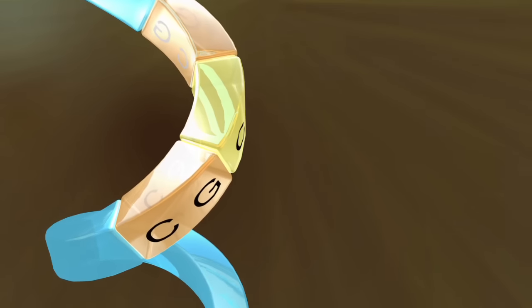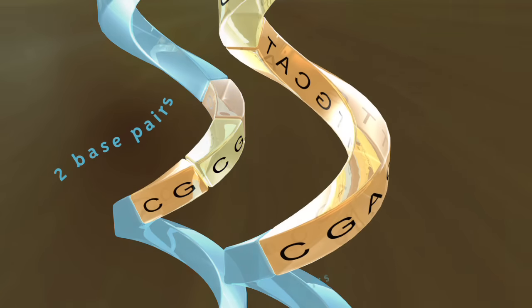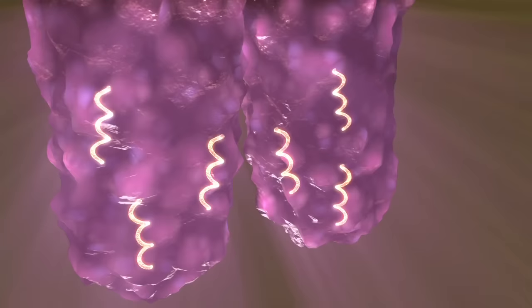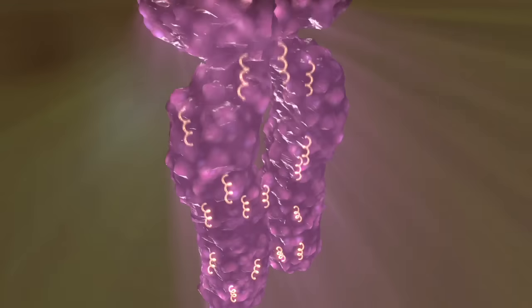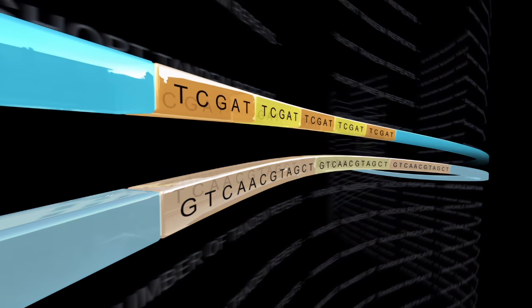As the name implies, the repeated stretches in STRs are short, only 2 to 10 base pairs long. For this reason, and because they are dispersed more evenly throughout the genome than the longer variable number tandem repeats, or VNTRs, STRs are favored by forensic labs.